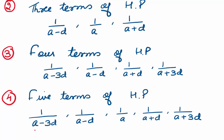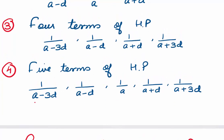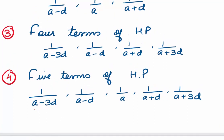We would be using this for problems. If you are asked to take four terms of an HP, we take them as 1/(a-3d), 1/(a-d), 1/(a+d), and 1/(a+3d). If you are asked to take five terms, we take them as 1/(a-3d), 1/(a-d), 1/a, 1/(a+d), and 1/(a+3d).